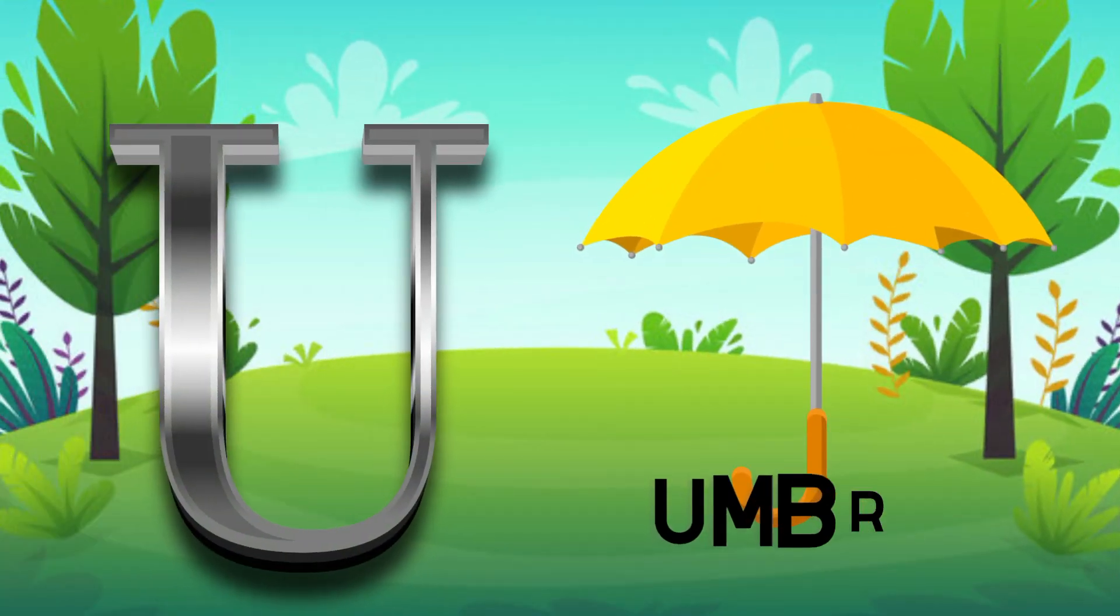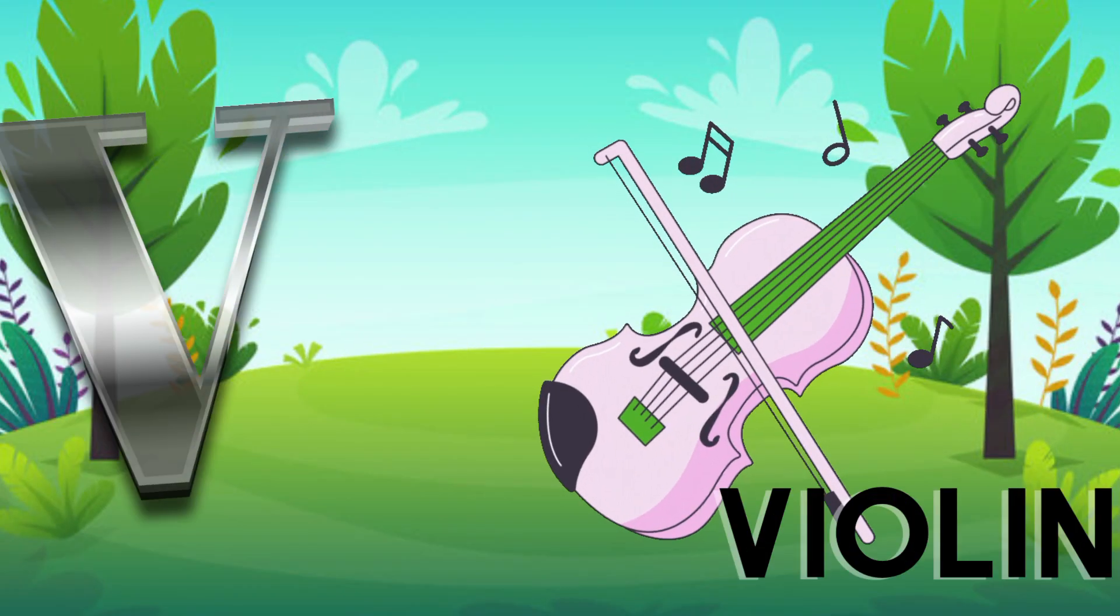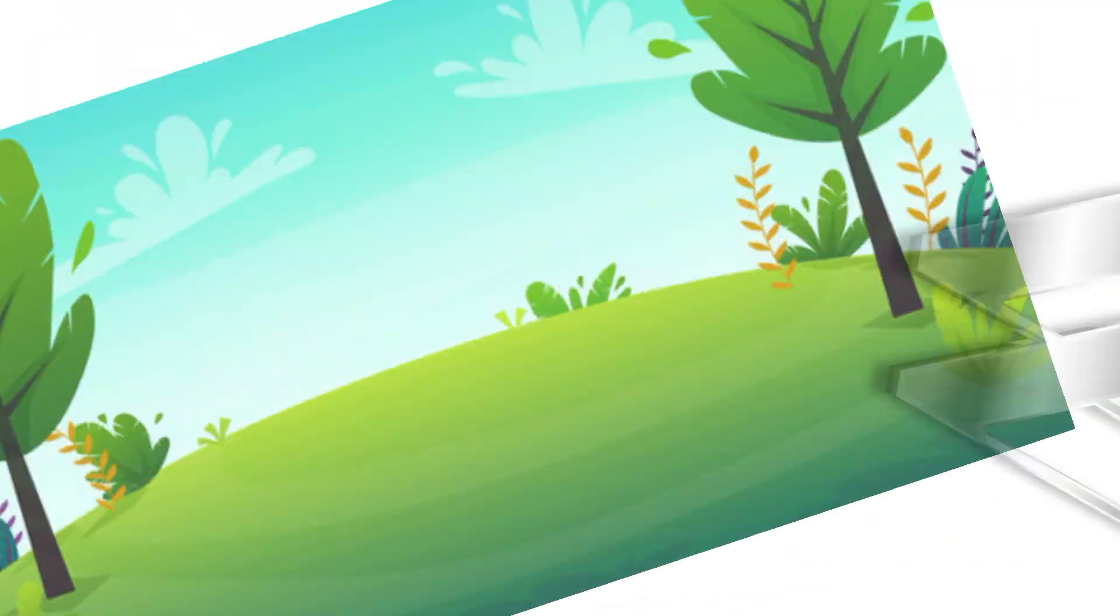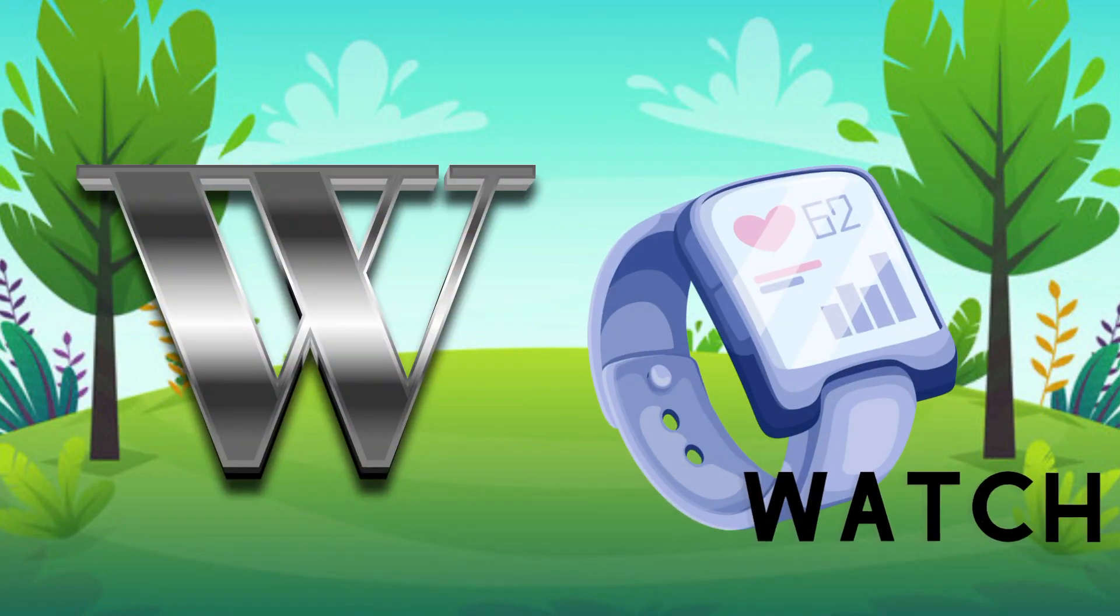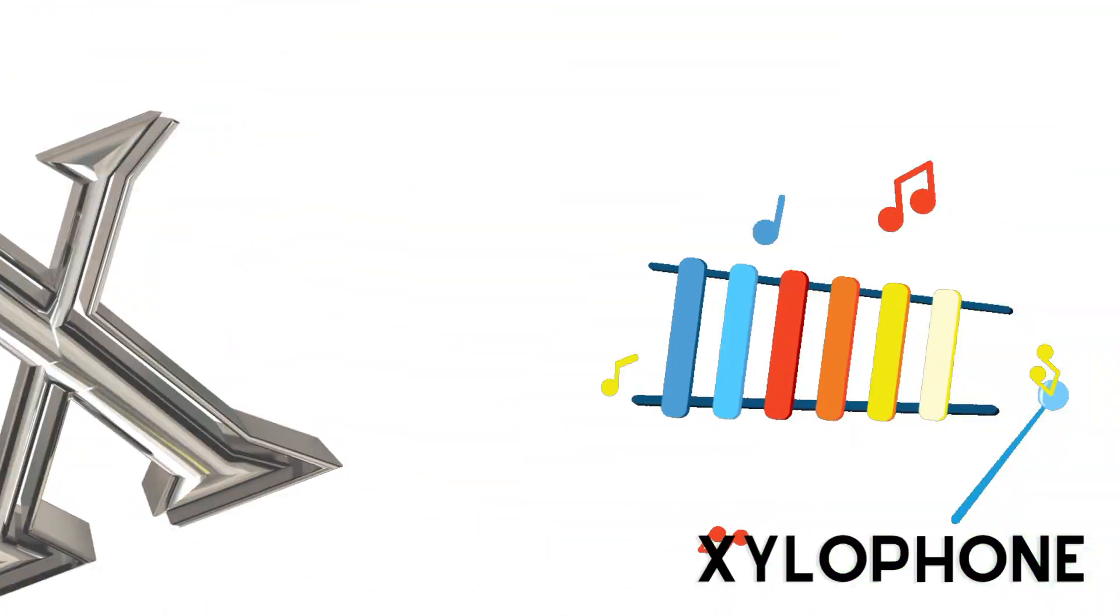U is for umbrella, u-u-umbrella. V is for violin, v-v-violin. W is for watch, w-w-watch. X is for xylophone, x-x-xylophone.